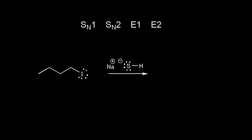In this video, we're going to look at primary substrates and figure out if the reaction is a substitution or an elimination. For this primary alkyl halide, we know an SN1 reaction is out because that would require a stable carbocation and we can't make one from this primary alkyl halide. An E1 reaction is out for the same reason as SN1 — we can't form a stable carbocation.